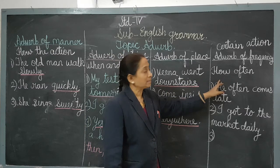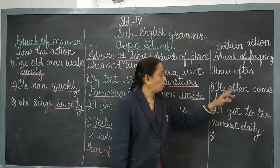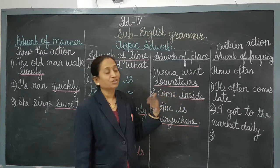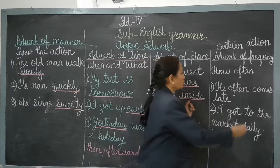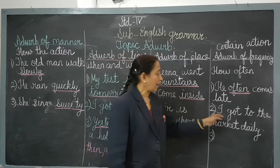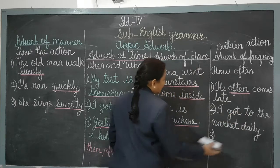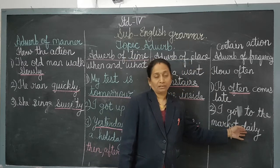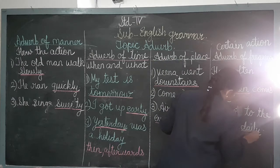Then the adverb of frequency. Adverb of frequency tells us how often an action happens. For example: 'He often comes late.' Here 'often' is the adverb of frequency — it means every time he comes late. Another example: 'I go to the market daily.' Here 'daily' is also the adverb of frequency, showing how often I go to the market.